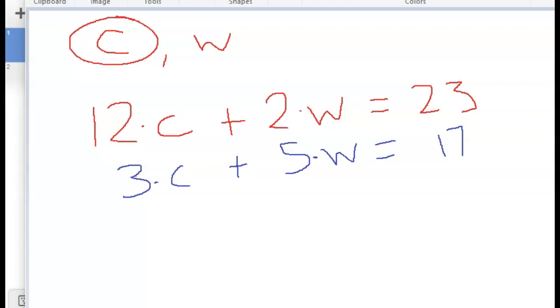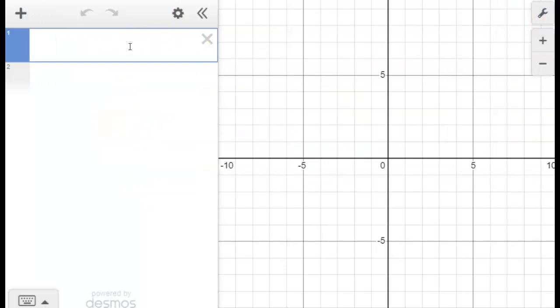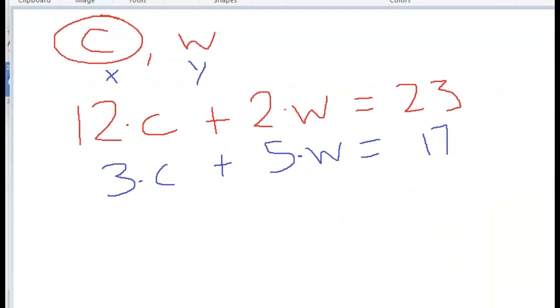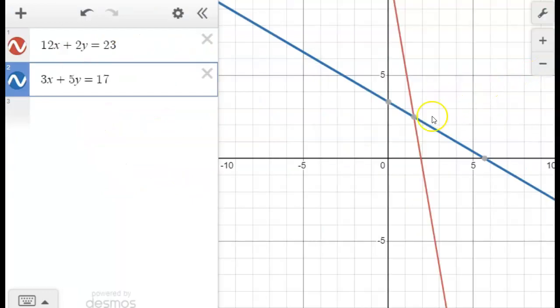And now, Desmos only lets you use x and y, so I'll just use x for my first one and y for my second one. So 12x plus 2y equals 23. That's our first line, and then 3x plus 5y equals 17. So just these two equations, I've changed x for y instead of c for chocolate chips and w for our walnuts.